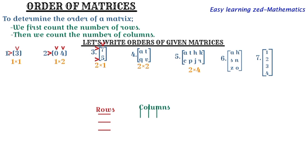Question six: let's check the rows. This matrix has three rows — A-H is the first row, S-N the second, Z-O the third. Now counting columns: A-S-Z is the first column, H-N-O is the second column. So this matrix has an order of three by two — three rows and two columns.